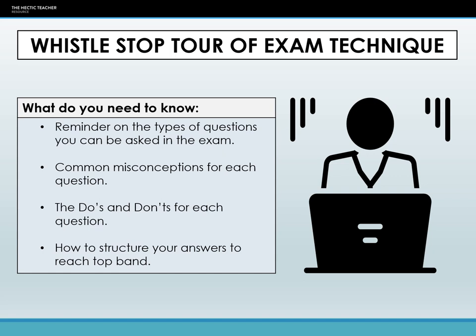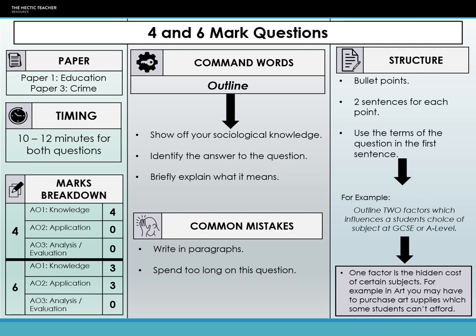If you want some more detailed breaking down, planning and building up of answers, have a look in the specific question type areas. There'll be some videos there for specific questions, but this is really just about the technique and what each question is asking you to do. So the first one we're going to look at is the four and six mark question, which appears on paper one and paper three for crime and education. These are short answer questions, the type you would do with retrieval practice and quizzing.